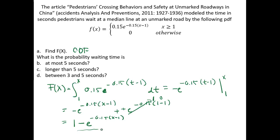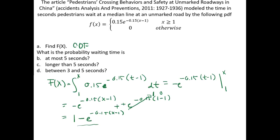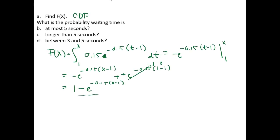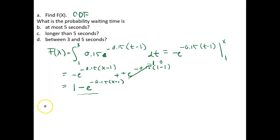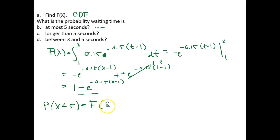To find the probability that the waiting time at the median is at most 5 seconds, we ask: what is P(X less than 5)? This equals F(5), where F is the cumulative density function.